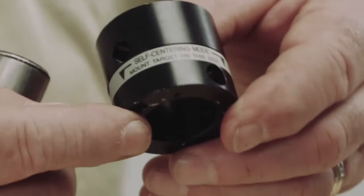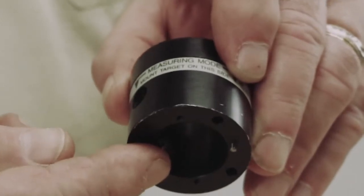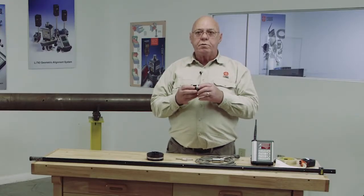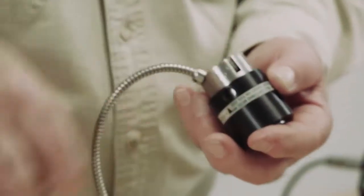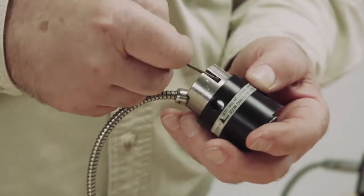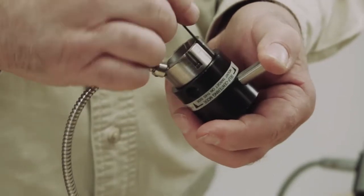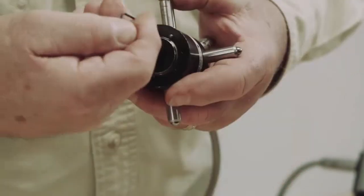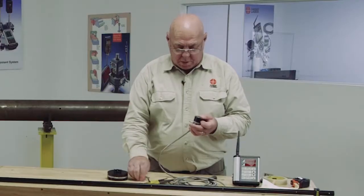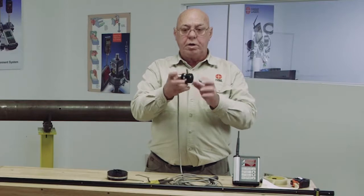We have on this adapter two sides: a self-centering mode and a measuring mode. When we're going to do the alignment, we want to put this in from the self-centering side. This target slides into the adapter, and then we have the set screws that we put in here to hold the target in place. Now we have to put the legs in. I have to have the target in there, and then I slide the leg in there and tighten the set screw against the legs.